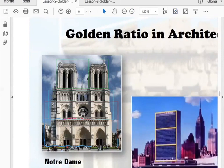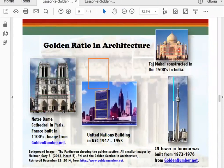Same with the tower here - we have three golden rectangles. We also have the Taj Mahal, which is also abundant with different golden rectangles. This was built in the 1500s in India. The CN Tower in Toronto was built in 1973 to 1976, and this is within the golden ratio.